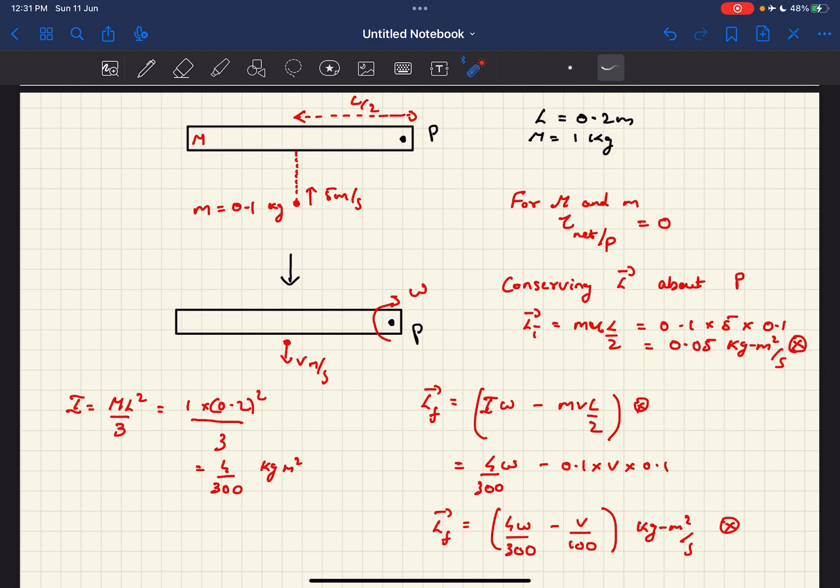In this question we have been given a rod which is hinged about point P and is free to rotate about this point P. We have been given another mass m which is approaching this rod with a velocity of 5 meter per second.